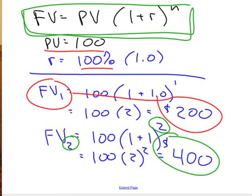If you put it in the bank for one year, the future value after one year, FV1, is 100 times 1 plus 1 to the first, which is 100 times 2, which is $200. Intuitively makes sense. At 100% interest, the value of your money doubles. $100 this year will be worth $200 next year.